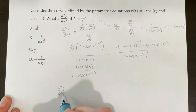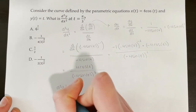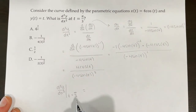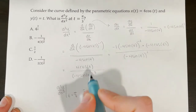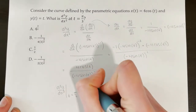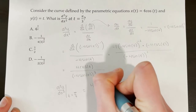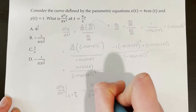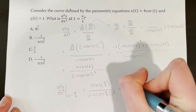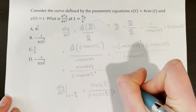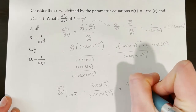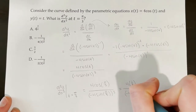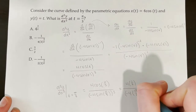Let's do a little cleanup before plugging in t equals pi over 3. We have negative 4 sine t to the negative 2 in the numerator and negative 4 sine t to the power of 1 in the denominator. Bringing these together, we get 4 cosine t over negative 4 sine t, all cubed. Plugging in pi over 3: cosine of pi over 3 is 1/2 and sine of pi over 3 is root 3 over 2.